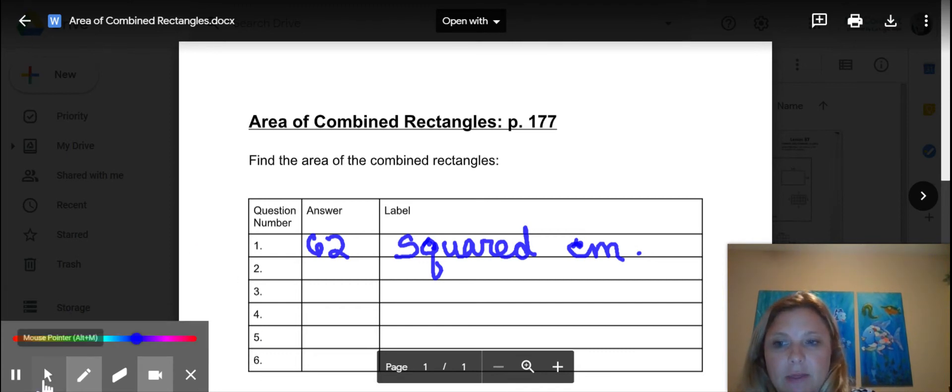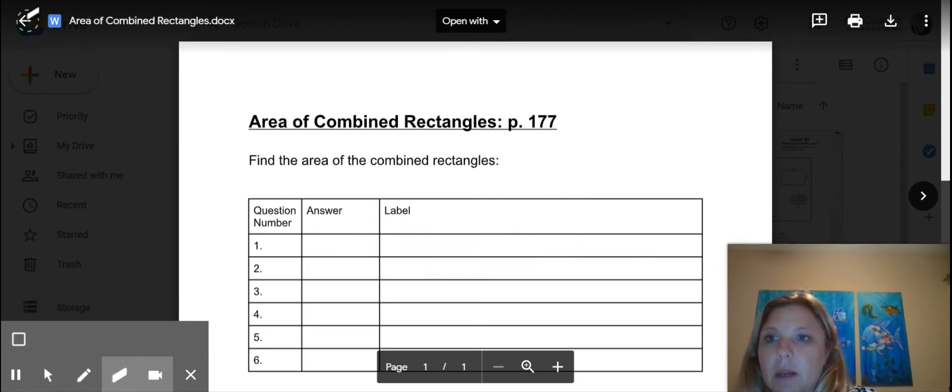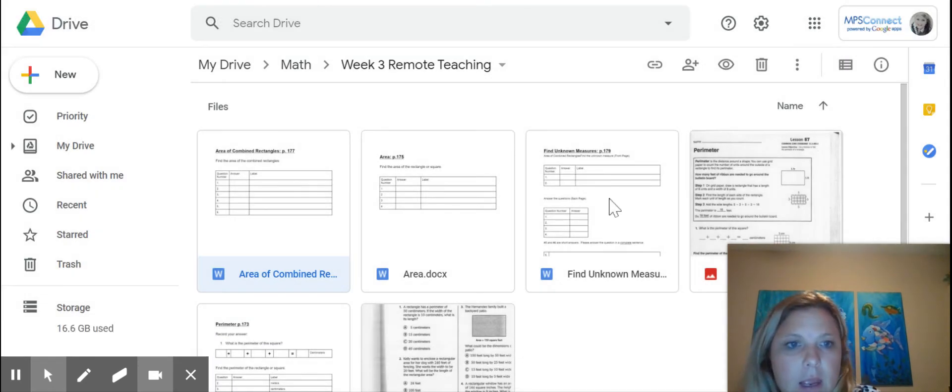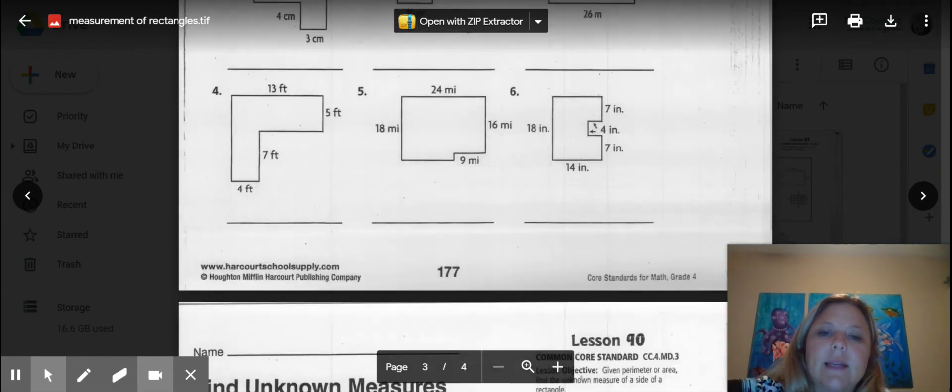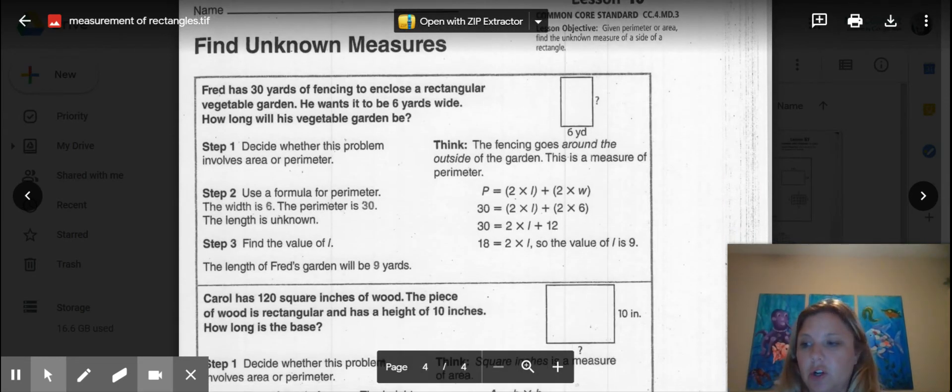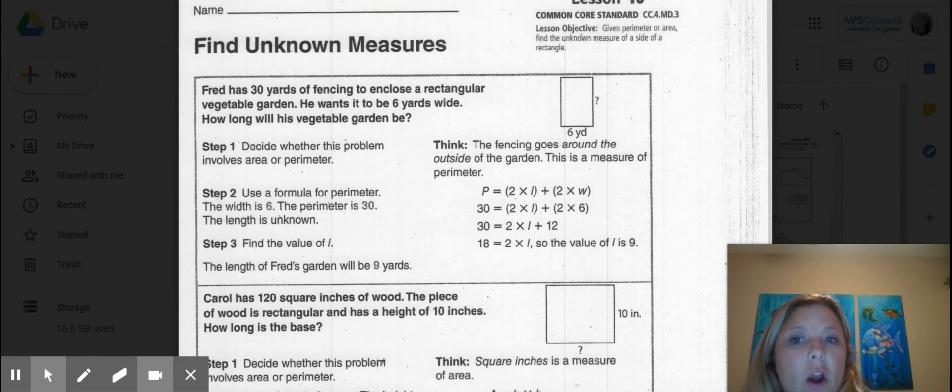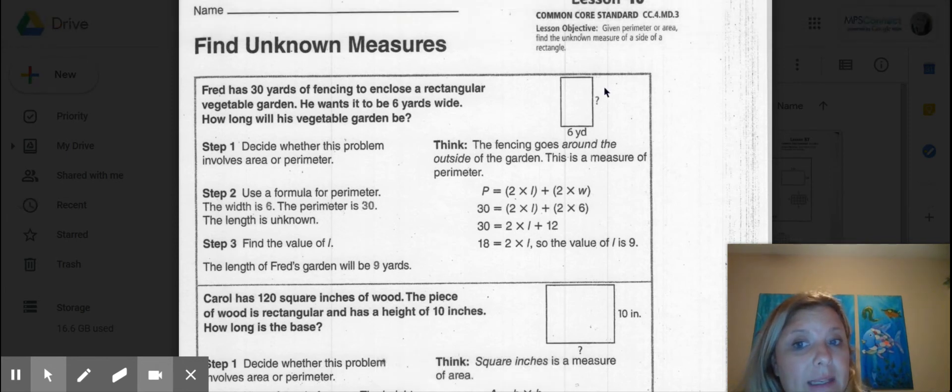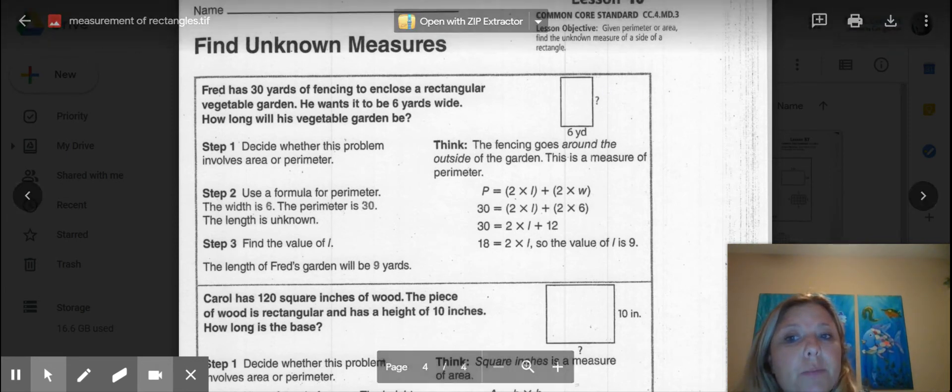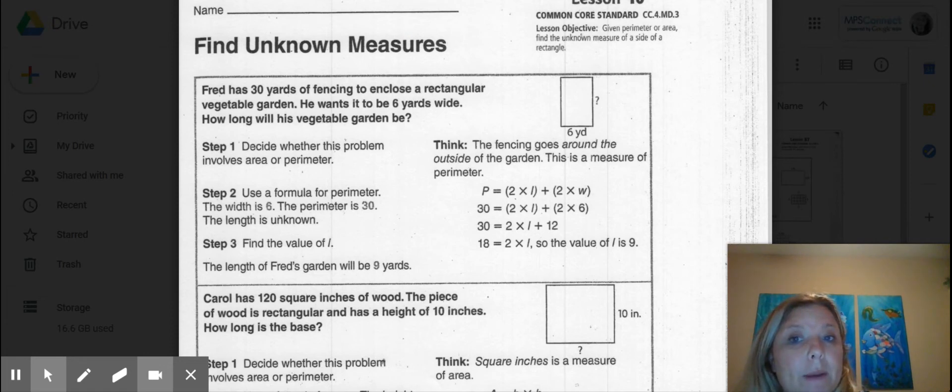The next assignment that you are going to be expected to do is Find Unknown Measures. Within Find Unknown Measures, if I look at my task analysis, it says that Fred has 30 yards of fencing to enclose a rectangular vegetable garden. He wants it to be six yards wide. How long will the vegetable garden be? We don't know what that measurement is. Step one, decide whether this problem involves area or perimeter.